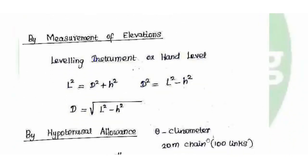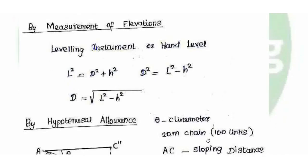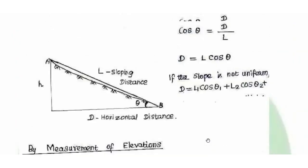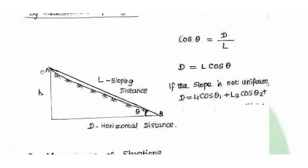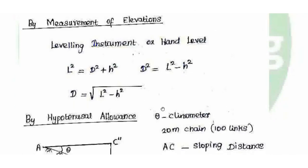Second, by measurement of elevation: we use a leveling instrument or hand level to measure the elevation h. For a uniform slope, the horizontal distance d is calculated as: d = √(L² − h²), where L is the sloping distance and h is the difference in elevation. This gives the horizontal distance by measurement of elevation.